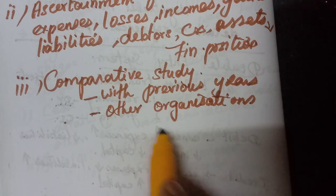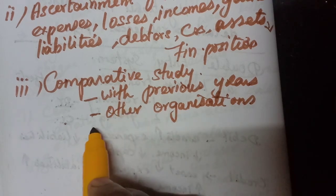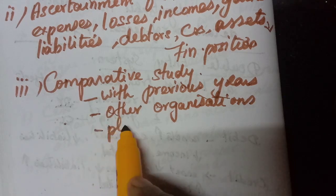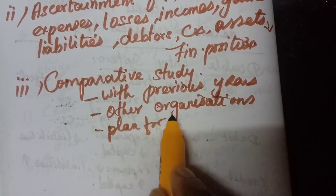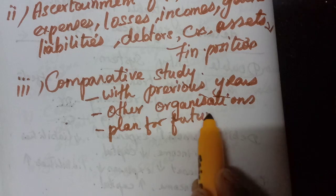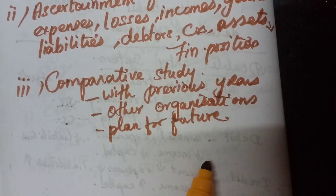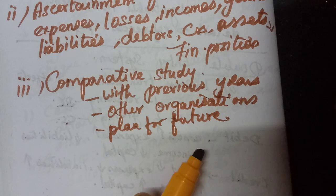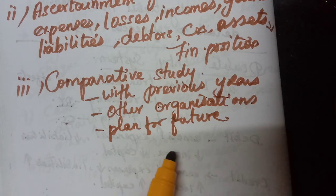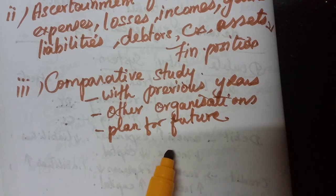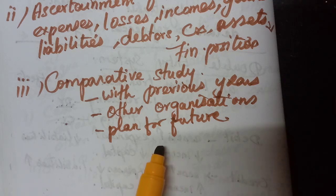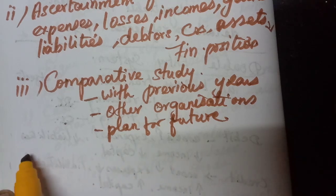If we compare, only then we can plan for the future. If we are not able to gain as much as other organizations, we can find out the error, locate the error, and suggest steps to improve our organization. So that is possible because of the double entry system.